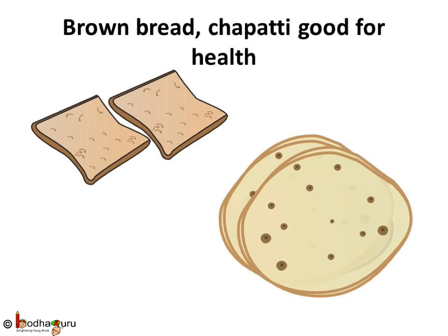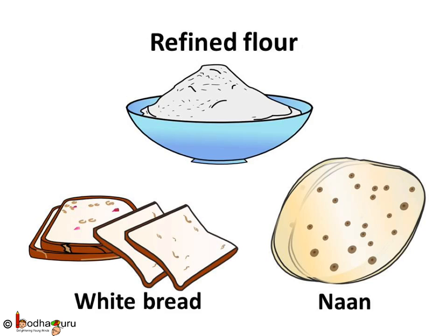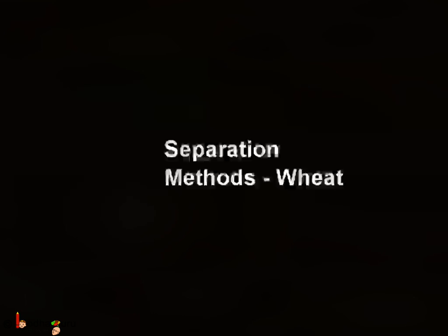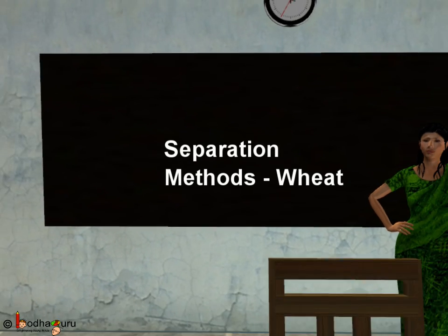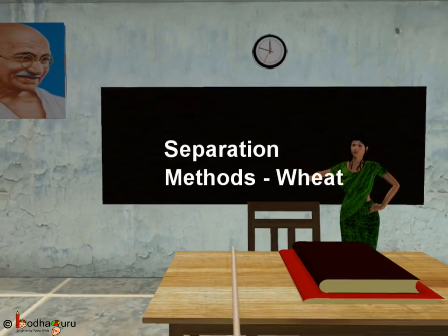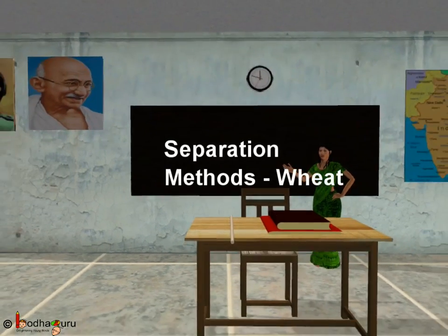So now you know that brown bread and rotis or chapatis are healthier than white bread and naans. That was all for today — bye-bye kids!